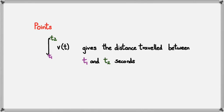Another important point: the integral of the velocity function between t1 and t2 gives the distance traveled between those times. For example, if a question asks how far an object moved in the fourth second, t1 would be 3 and t2 would be 4, and you'd integrate the velocity function between those limits.